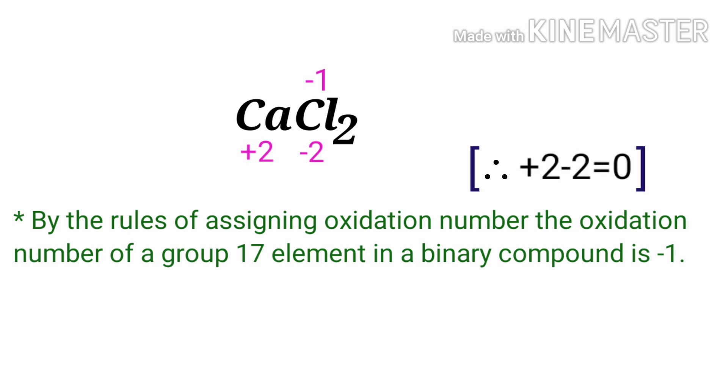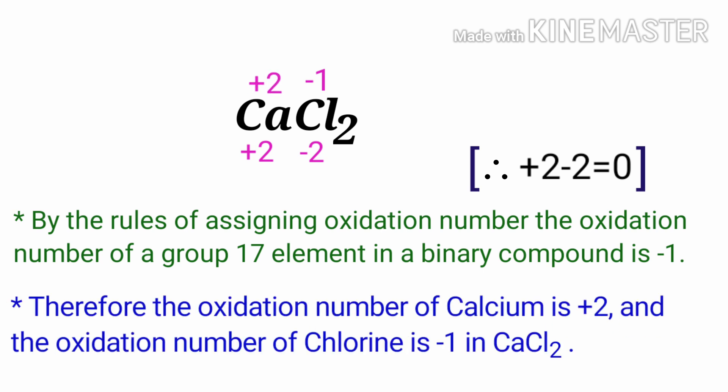The oxidation number of calcium is plus two, and the oxidation number of Chlorine is minus one in Calcium Chloride.